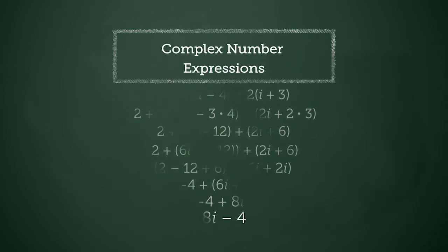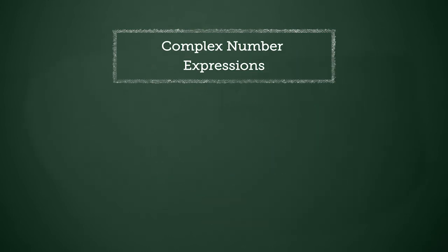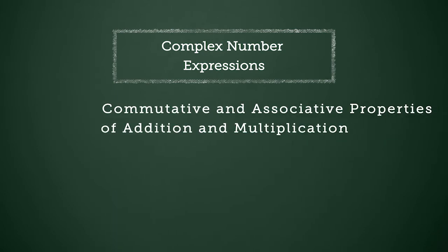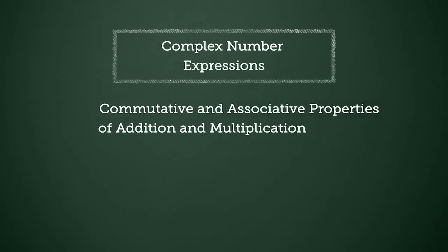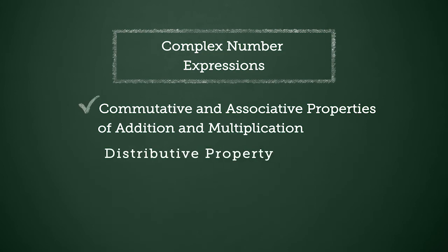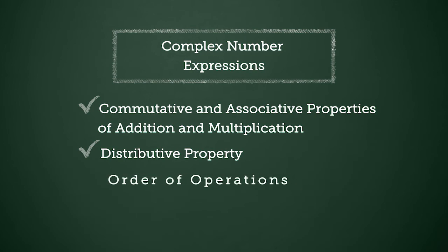Simplifying complex expressions uses the same properties as normal expressions, even if the final solution is more than one term. In order to reach the proper solution, it is important to understand the commutative and associative properties of addition and multiplication, the distributive property, and to remember the order of operations.